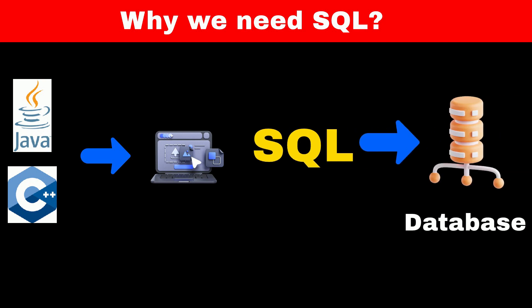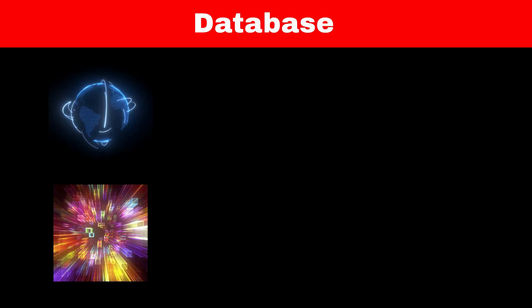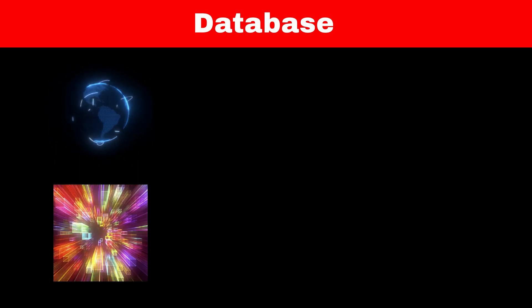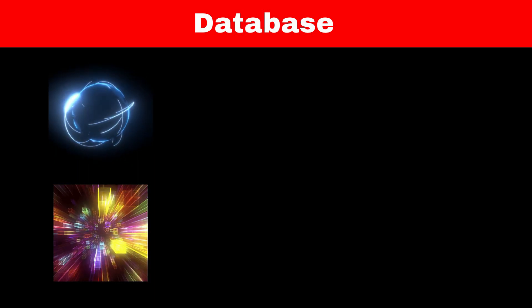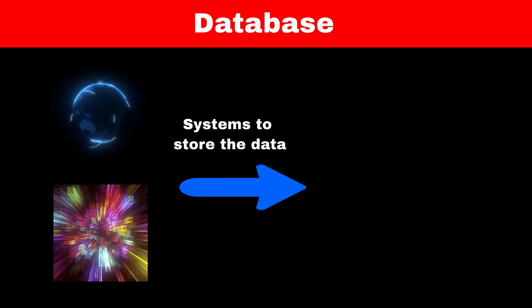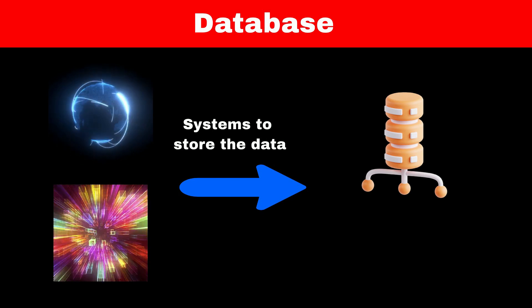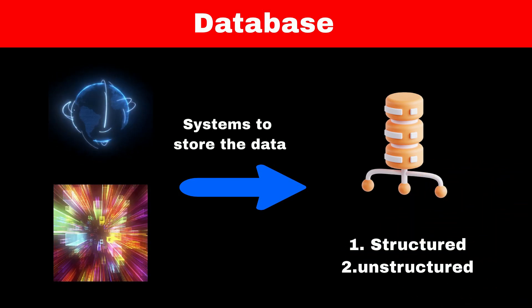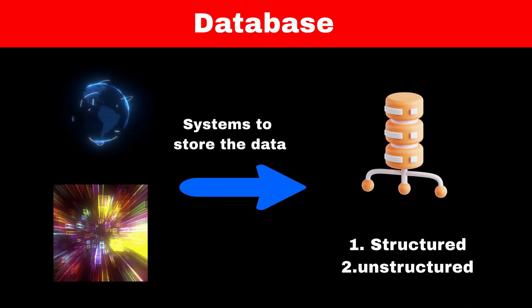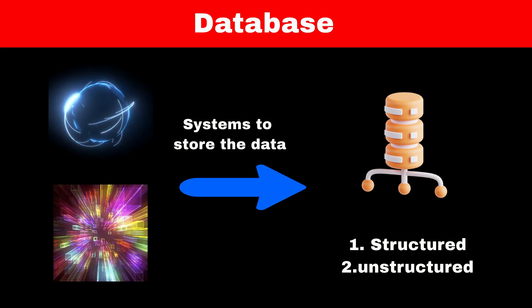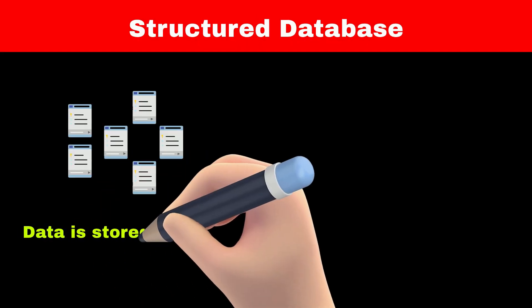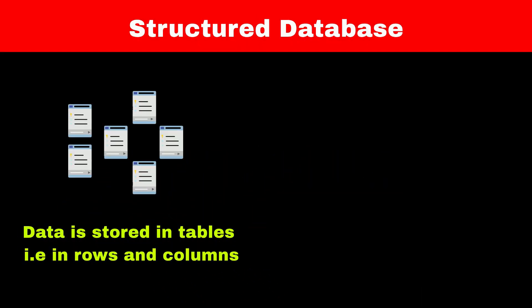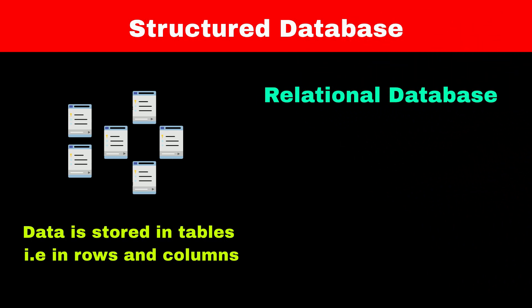Let's understand what a database is. Every day, millions of bytes of data are generated, so we need an efficient system to store it. These systems are called databases. Data in databases is stored in two formats: first is structured and second is unstructured. Structured format means data is stored in a predefined structure, typically stored in tables with rows and columns. This type of database is called a relational database.